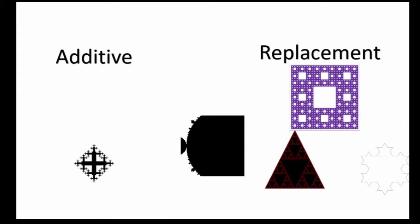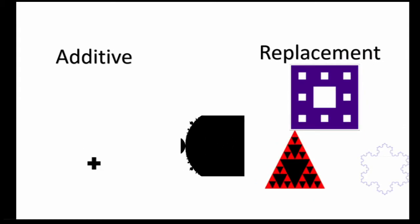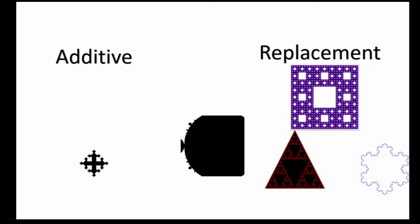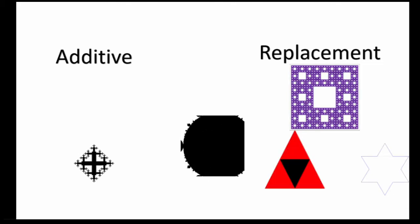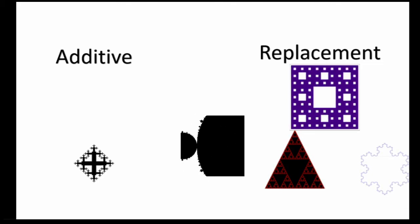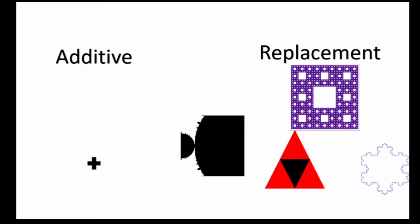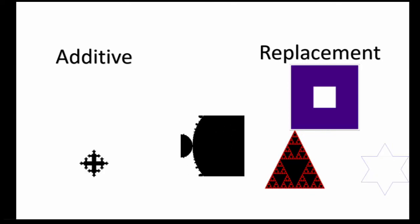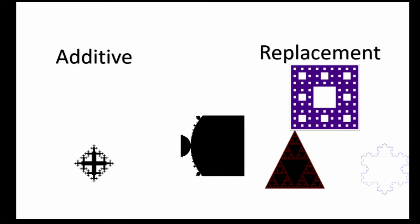An additive fractal is generated by adding a new pattern element to a specific place on the previous structure. A replacement fractal is made by replacing an element of the previous structure with a new pattern, typically made up of similar elements to the one replaced, but in larger numbers.